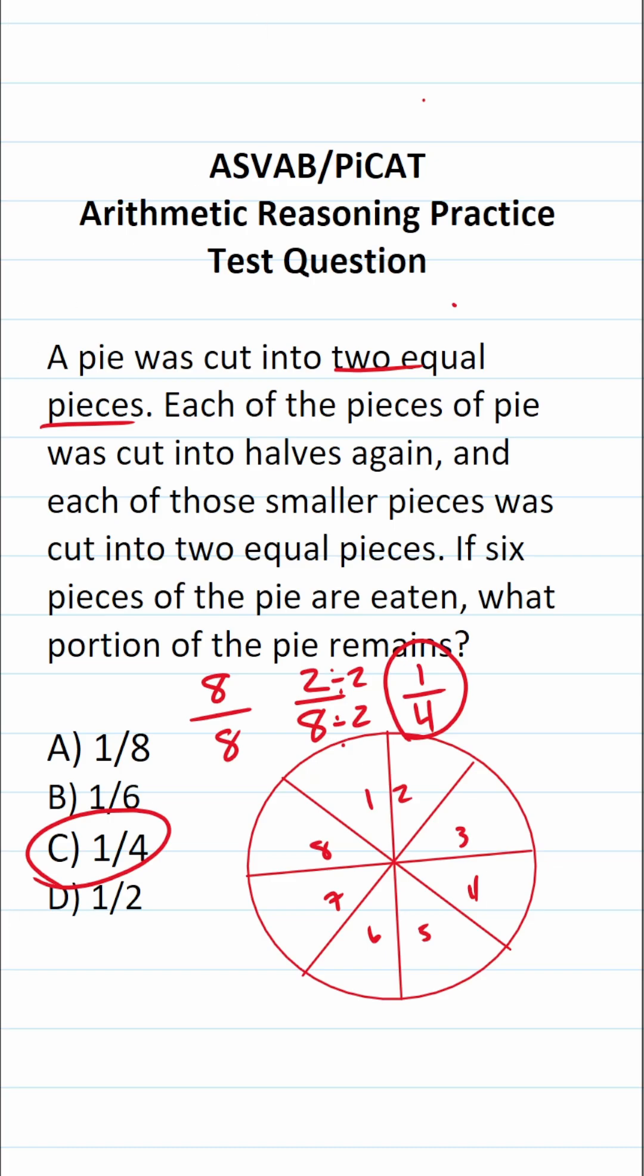Now let's say you're a visual learner. Again, we know six of these pieces of pie have been eaten. So let me go ahead and highlight these to indicate that those pieces have been eaten.